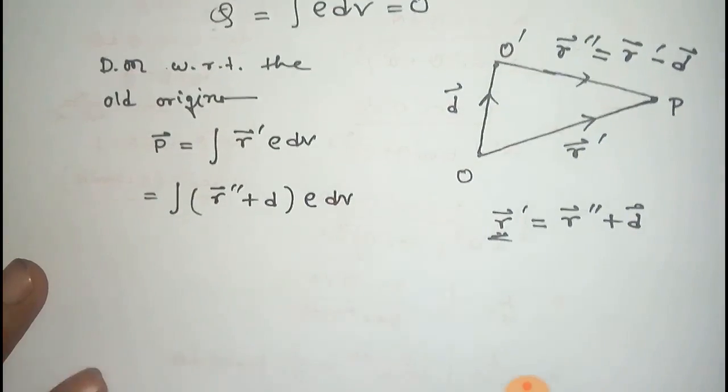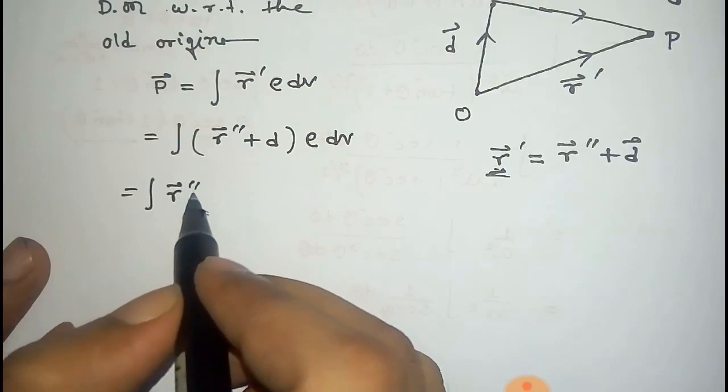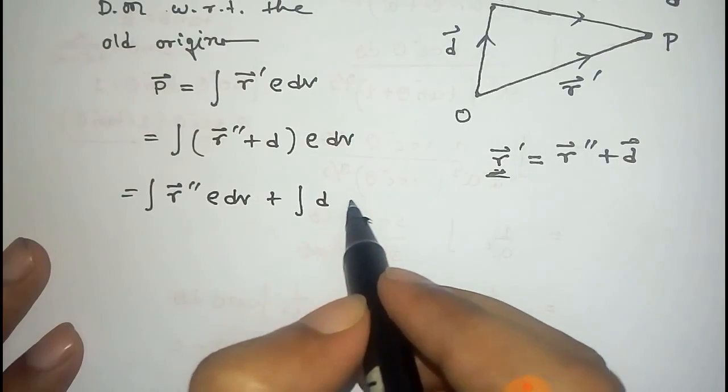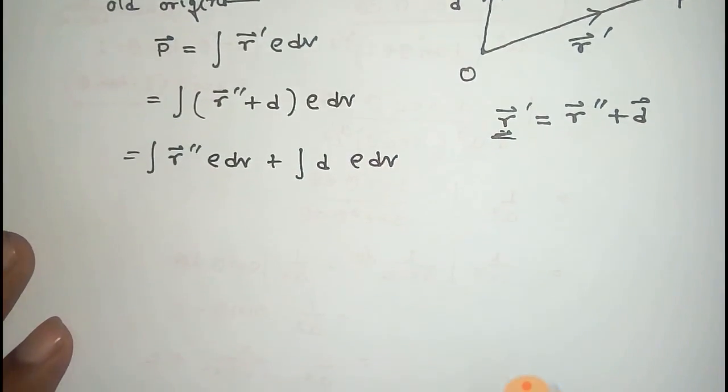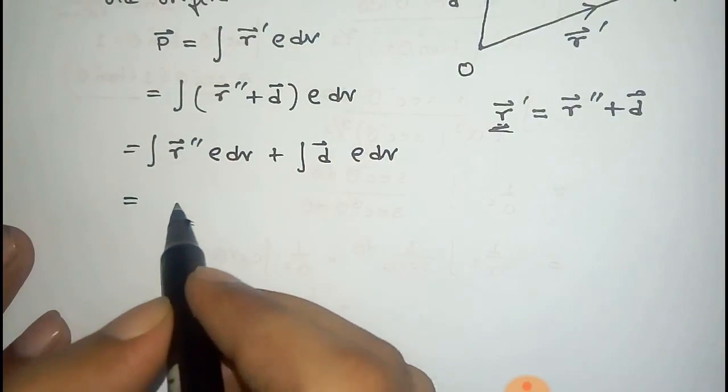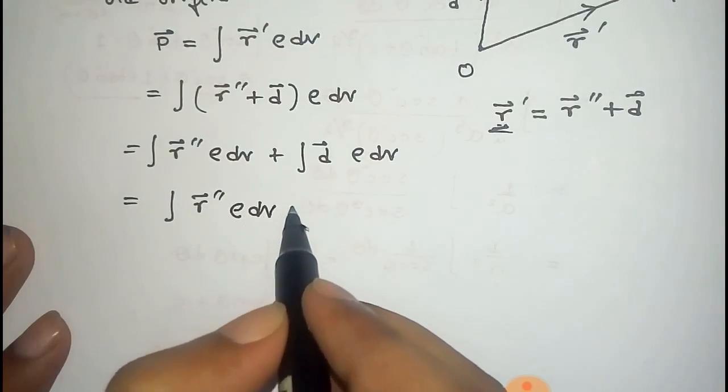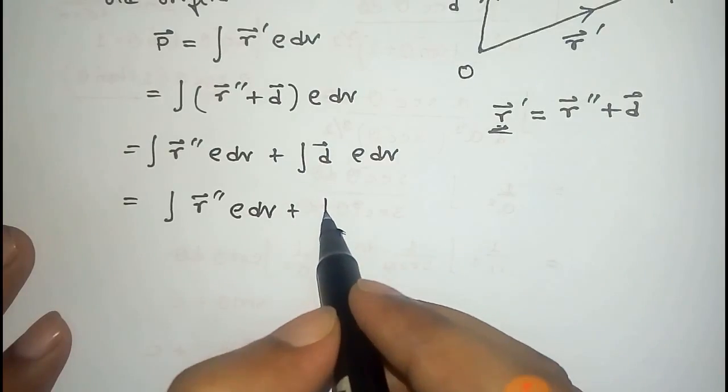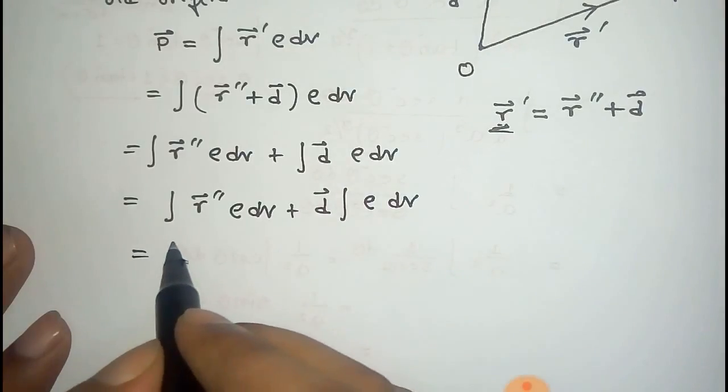This equals integral r double prime ρ dv plus integral d vector into ρ dv. Now d is independent of the coordinate, that is d is a constant, so it will come out of the integral and it will be d vector times integral ρ dv.